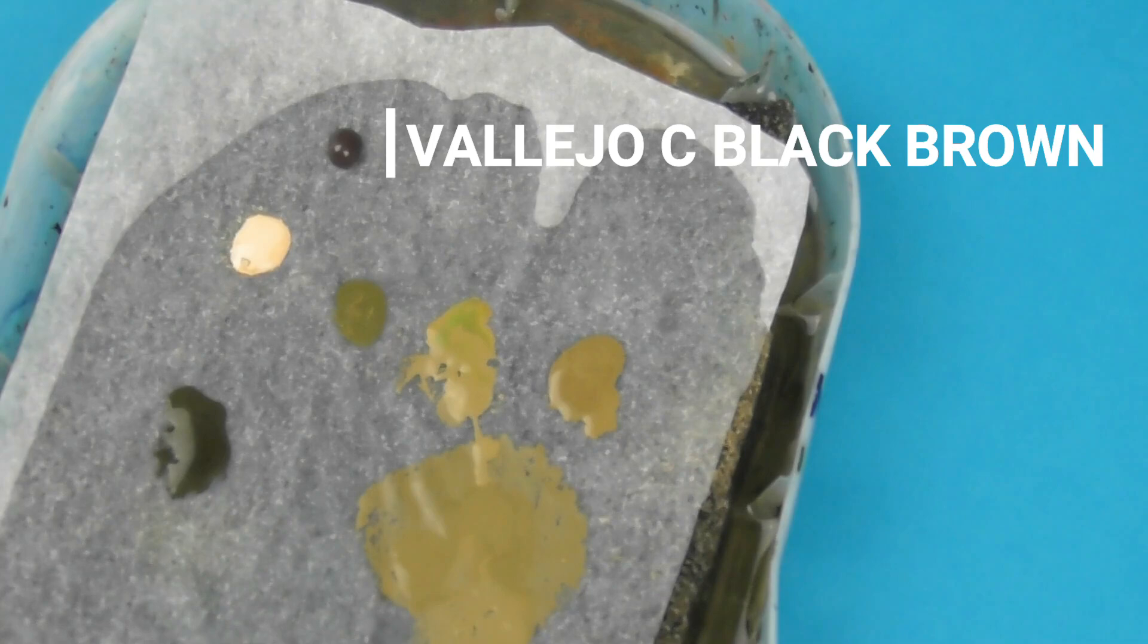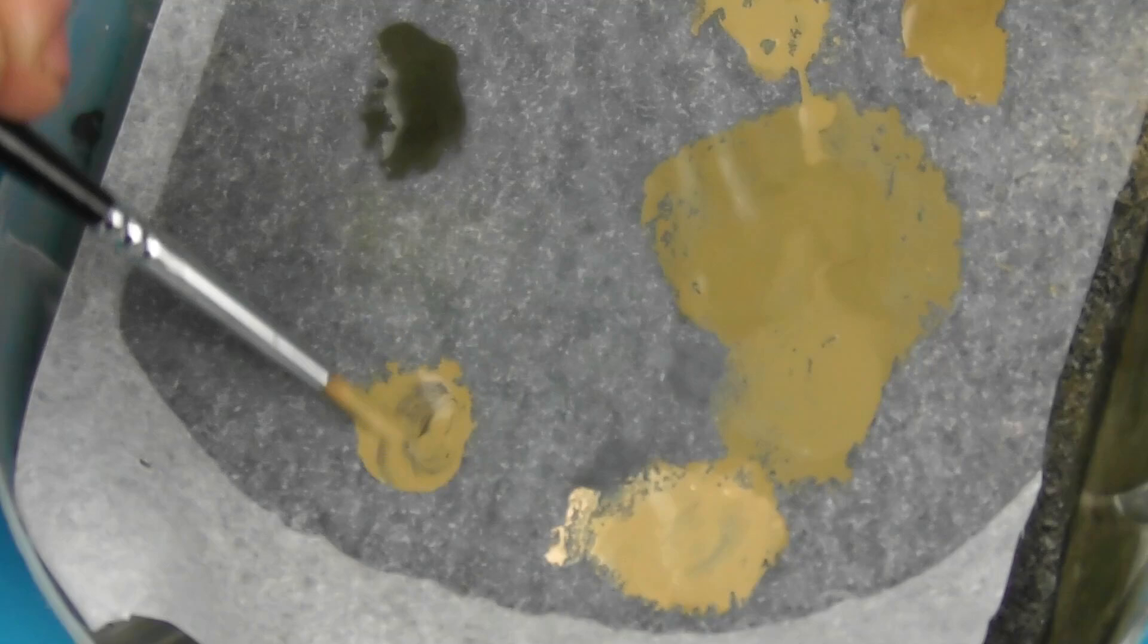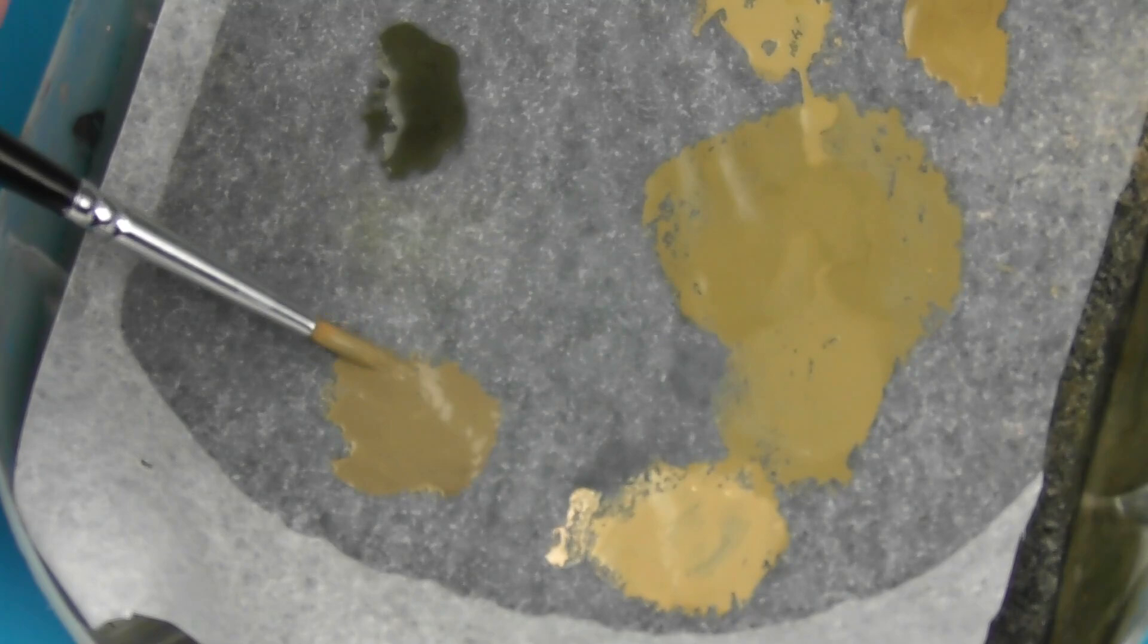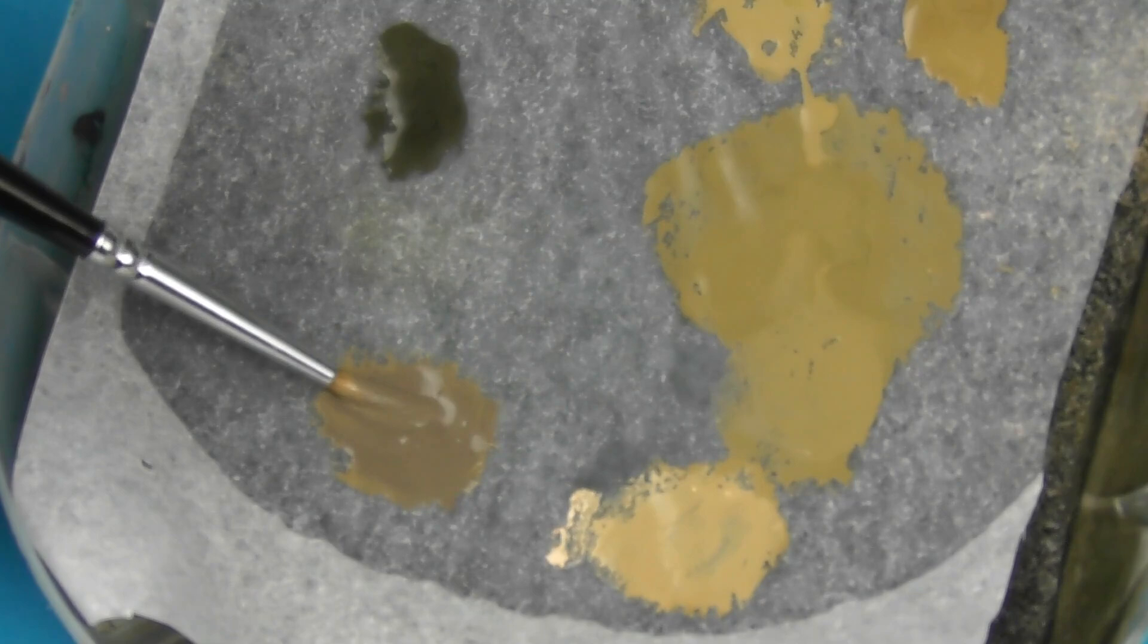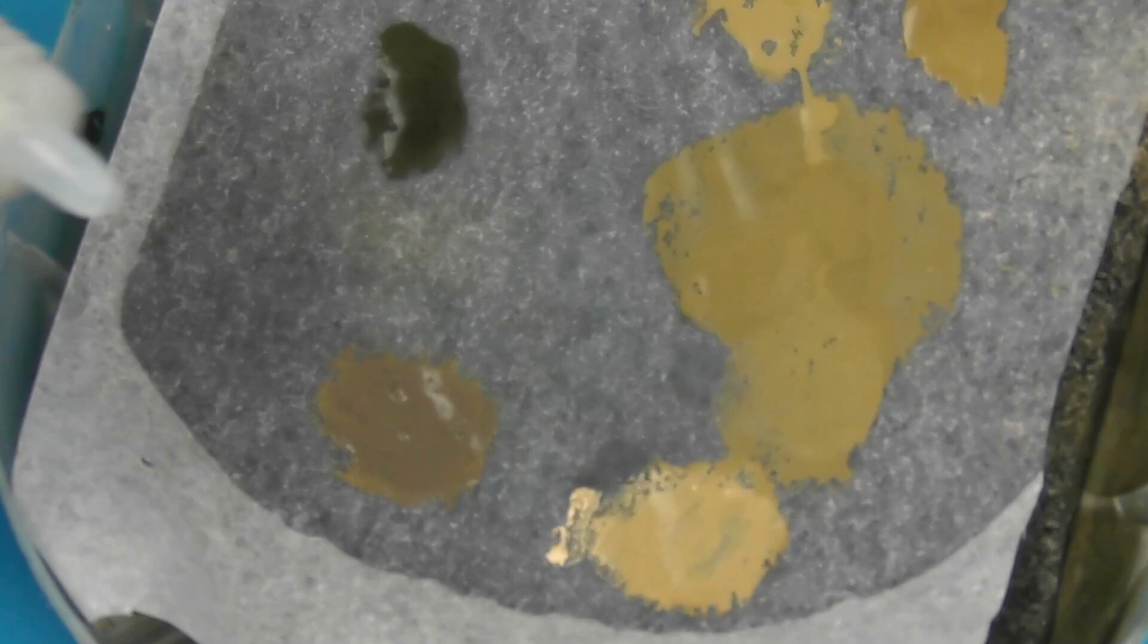Now with our basic highlighting done, now we're going to start adding some shadow. And the shadow is really going to help define a lot of these details. For that, we're going to take some Vallejo model colour German Camo Black Brown. This is my go-to for adding shade. This is just a perfect rich black brown. I'm going to take a little bit of our khaki or your canvas colour and mix a little bit of it into your black brown. I'm going to make a really deep, intense colour here that has a hint of our base colour.